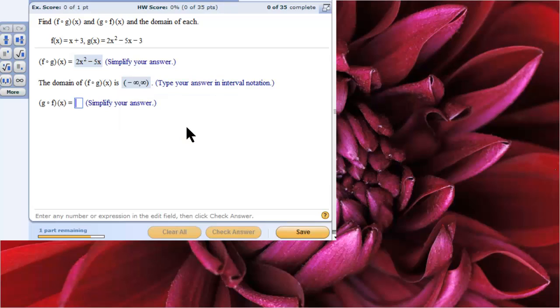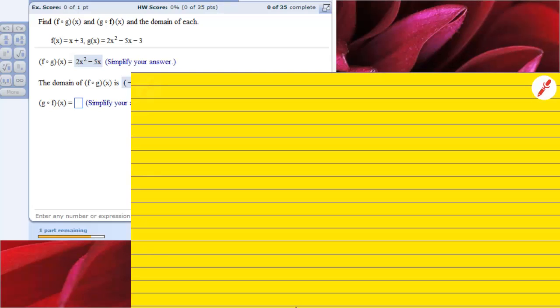Now, g of f of x. We're going to do that. Once again, f of x is x plus 3. g of x equals 2x squared minus 5x minus 3. This time, we're going the other way. This time, we're going to take f and put it in g.